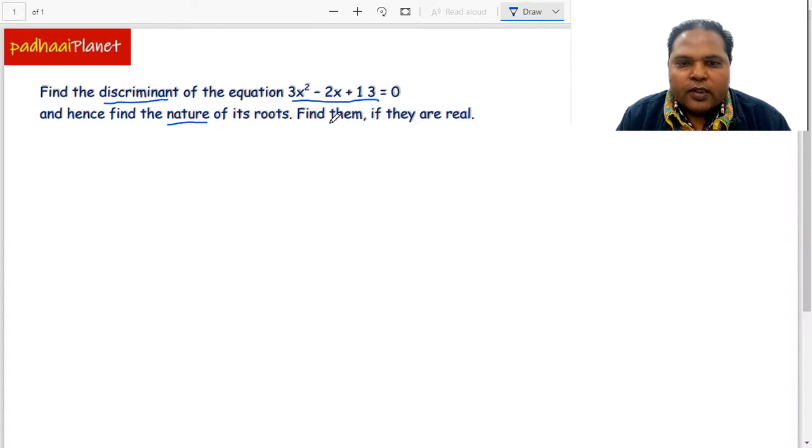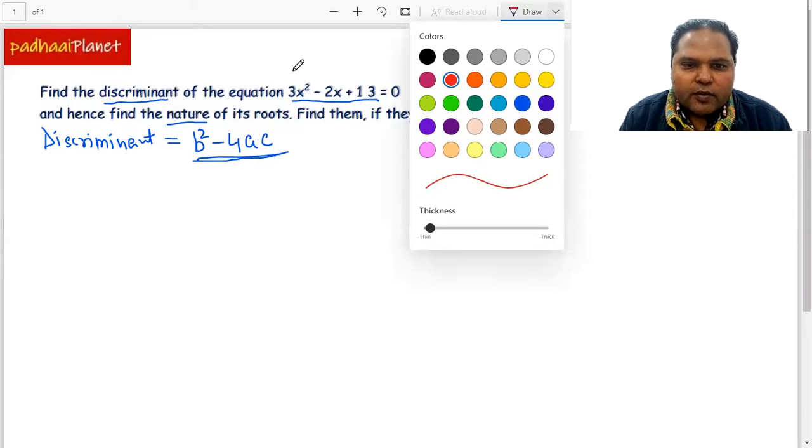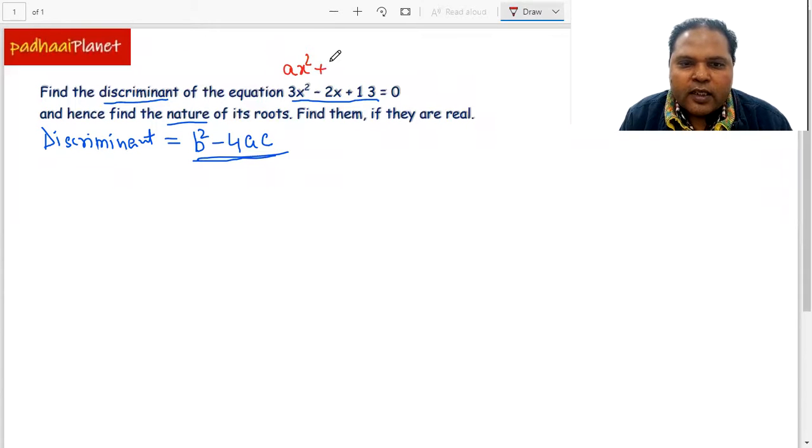If we have to find out the nature of the roots, then we need to find the discriminant of the equation. The discriminant of any quadratic equation is b² - 4ac. How do we get the values of b, a, and c from this equation? It's very simple - we need to compare this equation with the standard form of the quadratic equation.